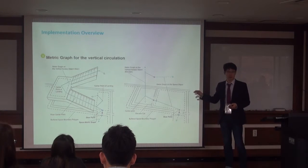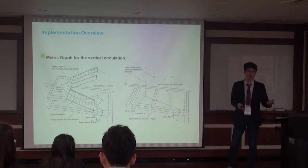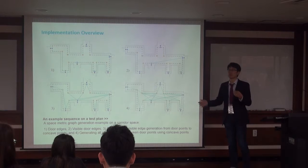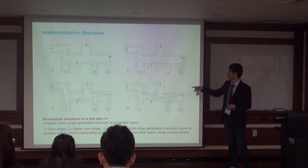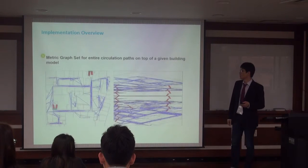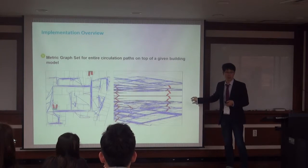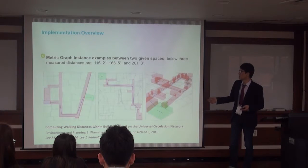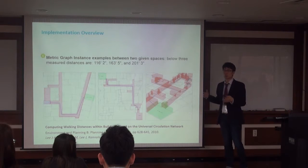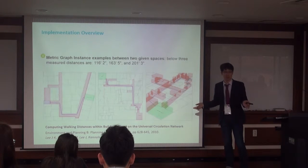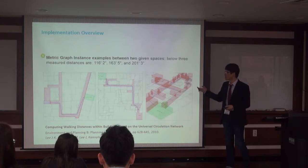We also have some vertical circulation objects: stairwells, elevators, ramps. Any type of combination of building interior can be handled in terms of this auto-generated circulation path graph. At the end, this is the given BIM model, and this is the auto-generated circulation path — the entire set of circulation paths. The rest is something like this: the circulation path we're interested in, for example, specific two spaces or many spaces and their connections in terms of the circulation graph.